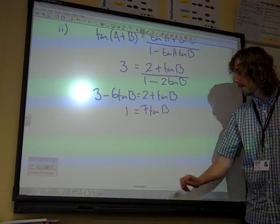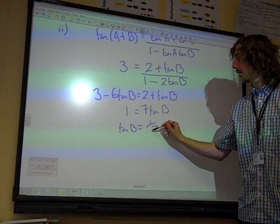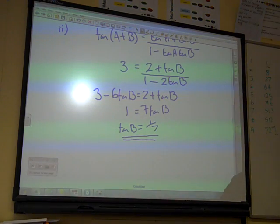That's meant to be a 7 there. And so tan B is 1 over 7. That's that.